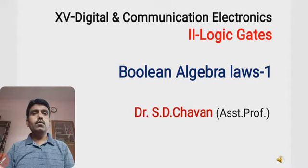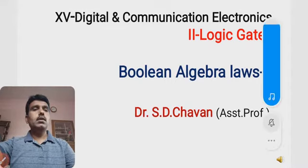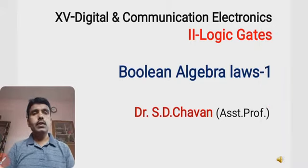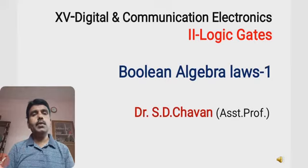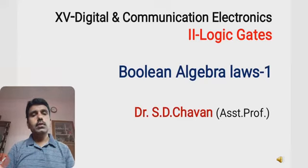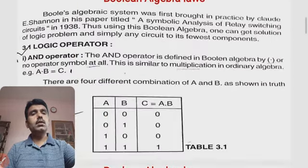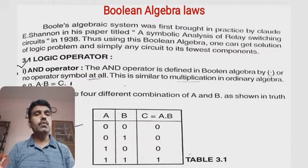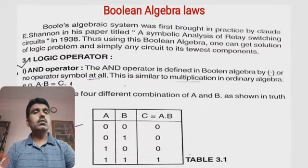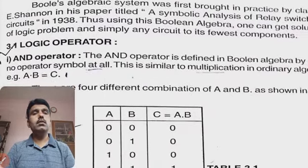Hello everybody, once again I am here for another part of this logic gates series. Today we will see what is exactly Boolean algebra and the laws related to it. It is the practice where algebraic relationships are implemented in logic circuits, which is what Shannon did. In 1938, he published a paper introducing systematic analysis of relay switching circuits.